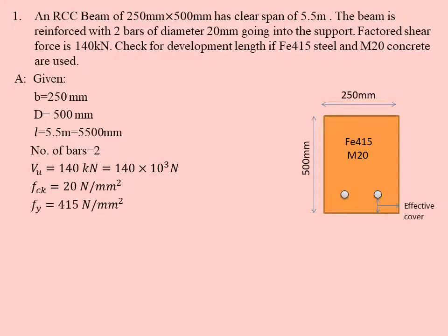FY is steel's characteristic strength, 415 N/mm². Now we find the area of steel provided: Ast = 2 × π/4 × 20² = 628.31 mm².